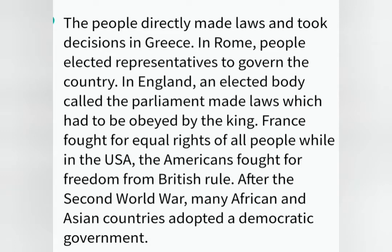So, children, the general explanation goes like this: the people directly made laws and took decisions in Greece. In Rome, people elected representatives to govern the country. In England, an elected body called Parliament made laws which had to be obeyed by the King. France fought for equal rights of all people, while in the USA, the Americans fought for freedom from British rule.